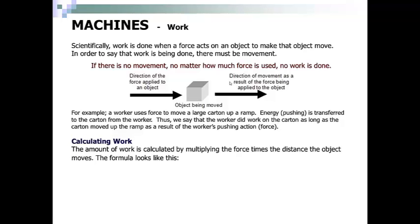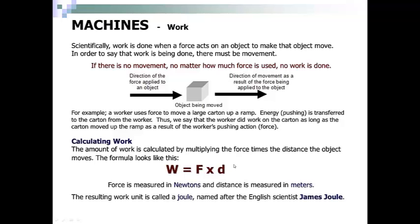The amount of work is calculated by multiplying the force times the distance the object moves. The formula is: Work = Force × Distance. Force is measured in newtons and distance in meters. If you don't have your distance in meters, you need to convert to meters. The resulting work unit is called a joule, named after English scientist James Joule.